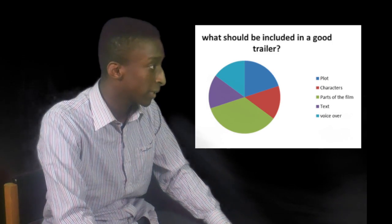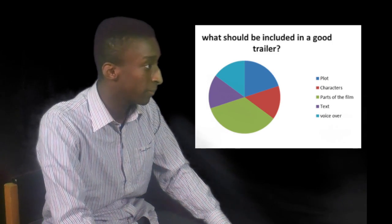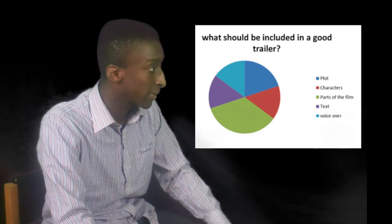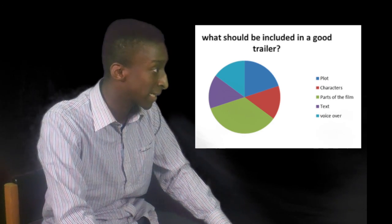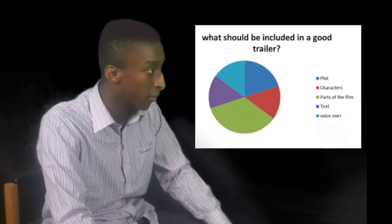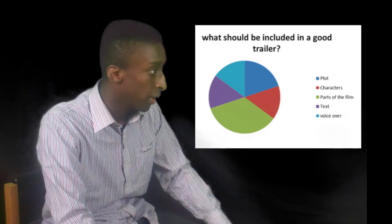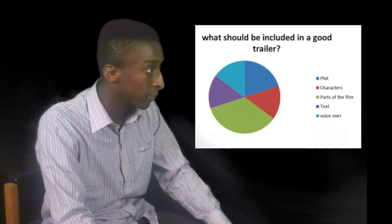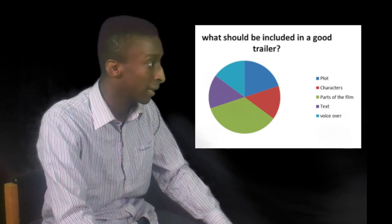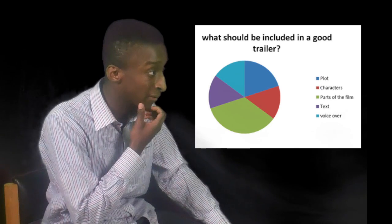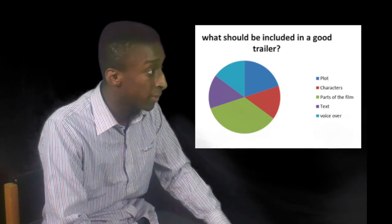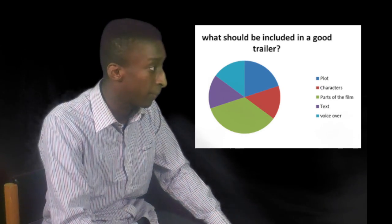We asked the audience what should be included in a good teaser trailer and separated it into six different sections: the plot of the film, the characters, the parts of the film, the text like intertitles, music, and the voiceover for a trailer.